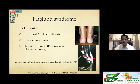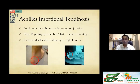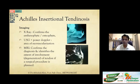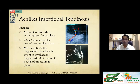Haglund syndrome is a triad of: insertional Achilles tendinosis, retrocalcaneal bursitis (inflammation in front of the tendon), and Haglund's deformity — the posterior superior calcaneal bump. All three together form the syndrome. The patient presents with focal tenderness and a bump at the bone-tendon junction, pain on rising from bed improving with walking, and evening fatigue-related pain. On examination: local tenderness, thickening at the bone-tendon junction, and tight gastrocnemius. Imaging: x-ray confirms enthesophyte/osteophyte, Doppler sonography shows neovascularization, and MRI confirms diagnosis and extent of tendon degeneration — critical for surgical planning.